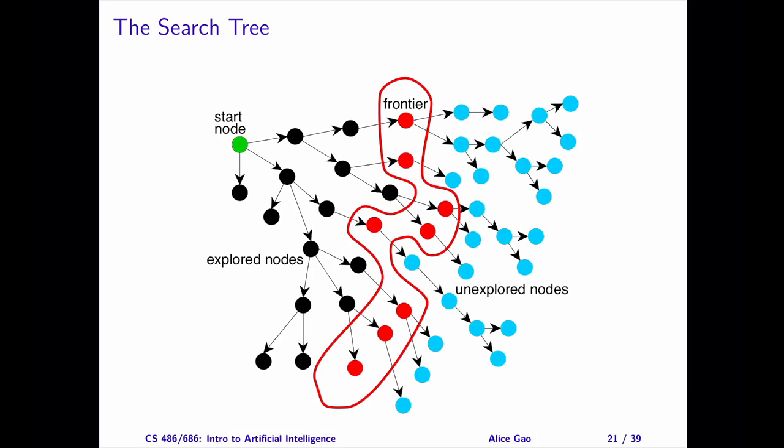It is important to distinguish between the search graph and the search tree. Here are a few points. First, we can construct the search graph given a problem formulation, whereas creating the search tree requires executing an algorithm. Second, each state appears once in the search graph, but can appear multiple times in the search tree.